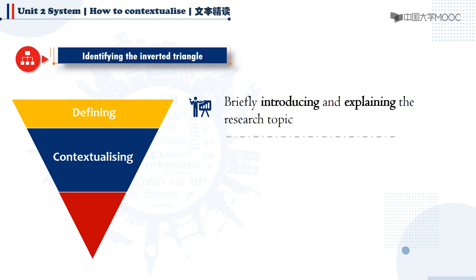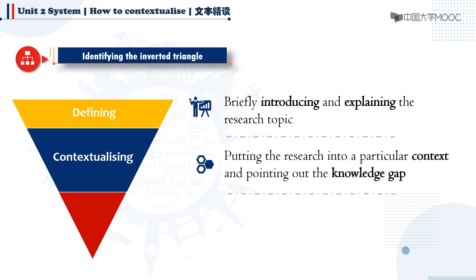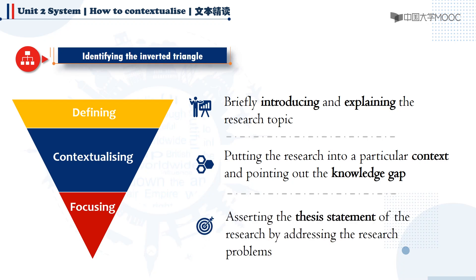The next stage is contextualizing, which puts the research into a particular context and points out the knowledge gap. This is where you discuss the topic from a particular perspective and persuade your readers why your research is worthwhile. Based on the knowledge gap you have found, the introduction section then moves to the stage of focusing, where you assert the thesis statement of the research by addressing the research problems. What is the inverted triangle structure like in Text 3? Let's now take a close look at it sentence by sentence.